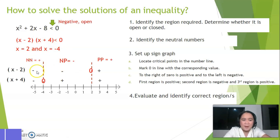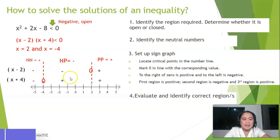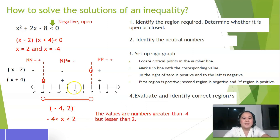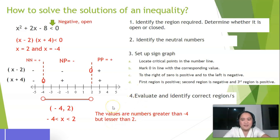Take note: for a quadratic inequality, the sign pattern of regions is always positive, negative, positive. Since we need negative and the graph is open, we refer to the second region. That gives us negative four to two, open on both ends. The interval form is: parenthesis negative four comma two parenthesis. The equation equivalent is: x is greater than negative four but lesser than two. Those are the solutions to this inequality.